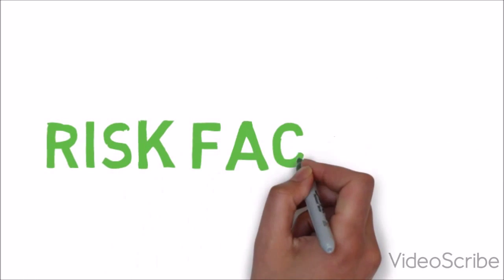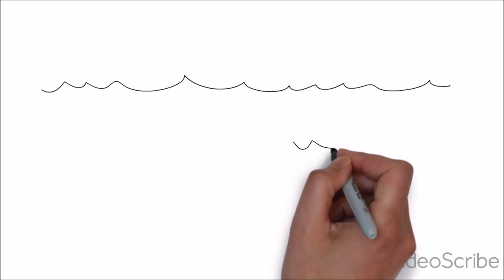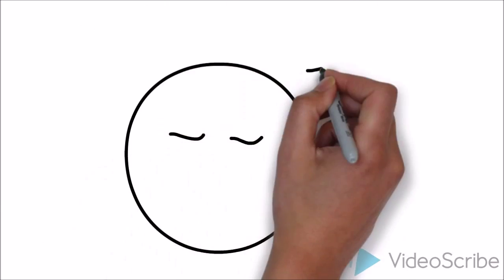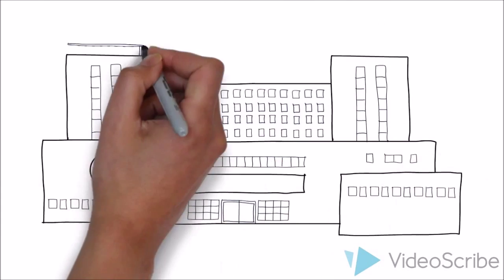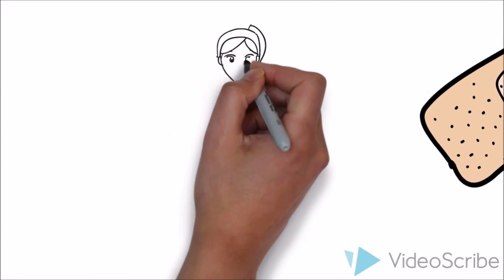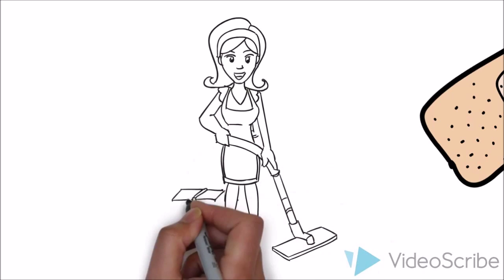So let's look at some of the risk factors of bacterial keratitis. Risk factors include going swimming in your contact lenses, also wearing contact lenses and going to sleep, as well as trauma to the eye and inadequately disinfecting your contact lenses.